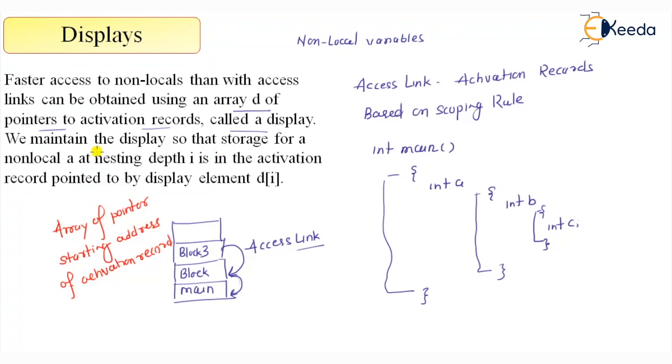That is the idea. We maintain the display so that storage for the non-local at nesting depth i is in the activation record pointed by display element d[i]. We don't need to go to the depth. Think of more and more blocking structures. Suppose there is a block four going more into depth. Rather than following a linked list, I can directly maintain an address of main for block one rather than following all this way. That will be maintained as an array.